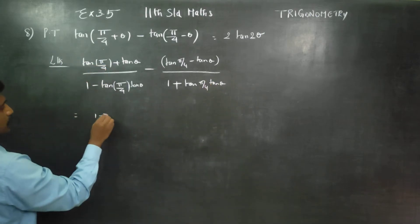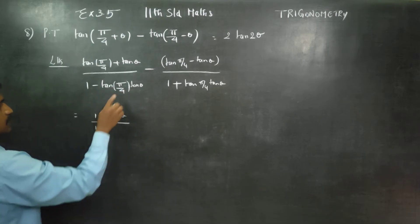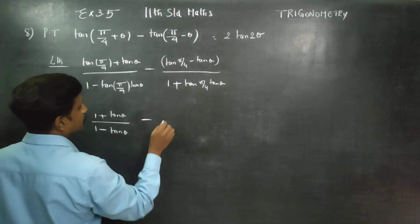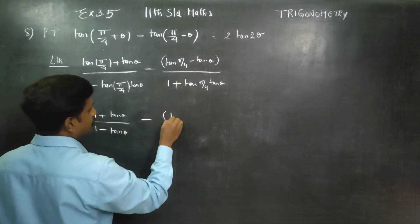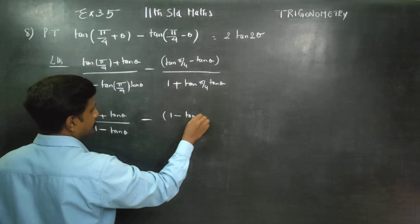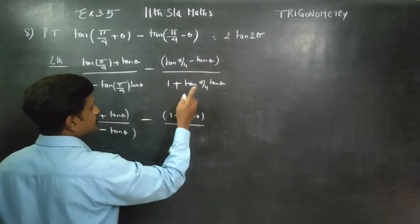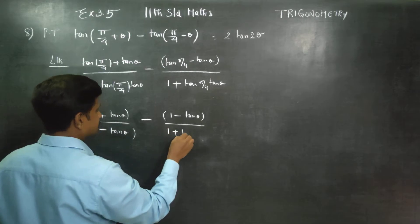Tan 45 is 1, therefore 1 plus tan theta, 1 minus, tan 45 is 1, 1 into tan theta is tan theta. Minus, tan 45 is 1 minus tan theta by, tan 45 is 1, 1 into tan theta is 1 plus tan theta.